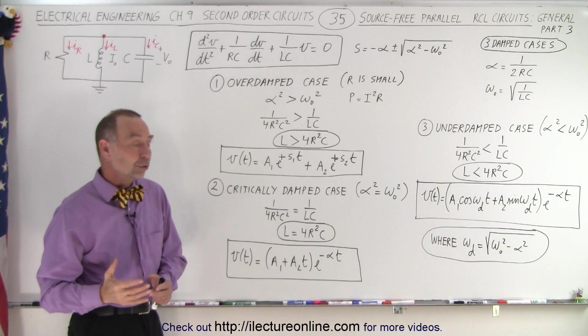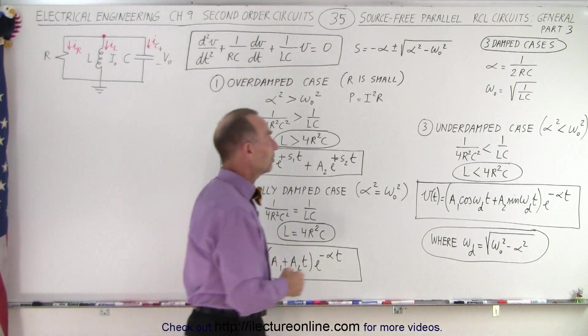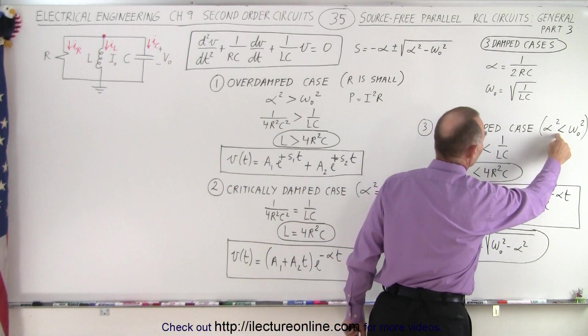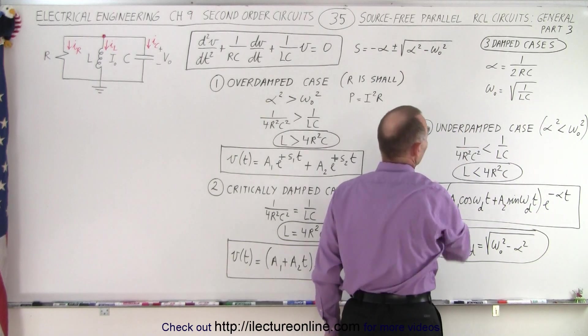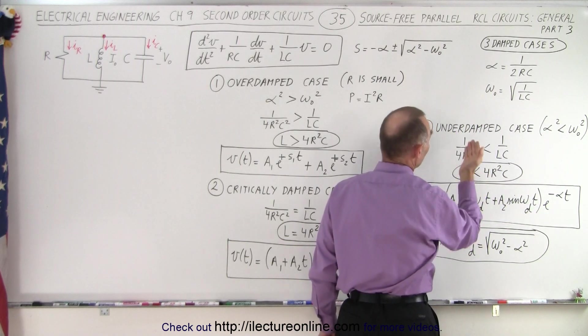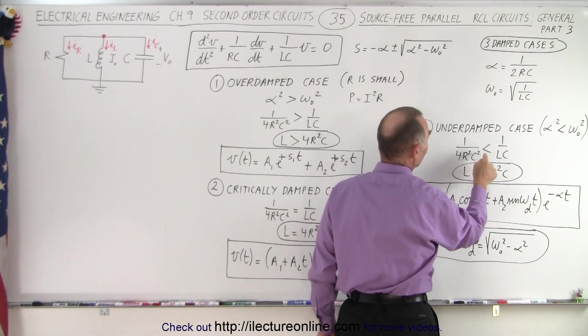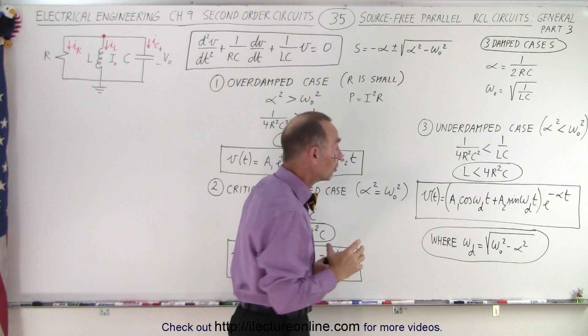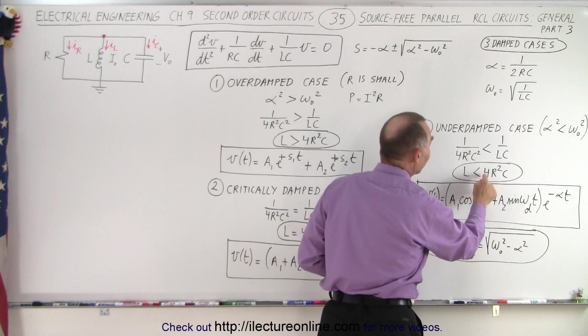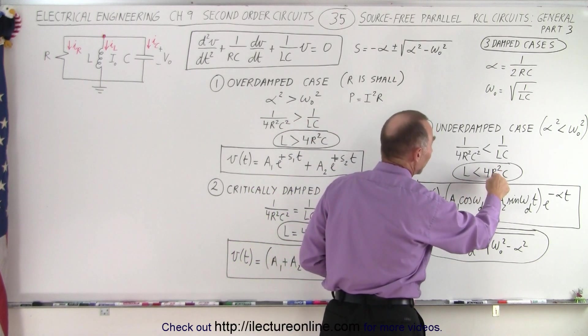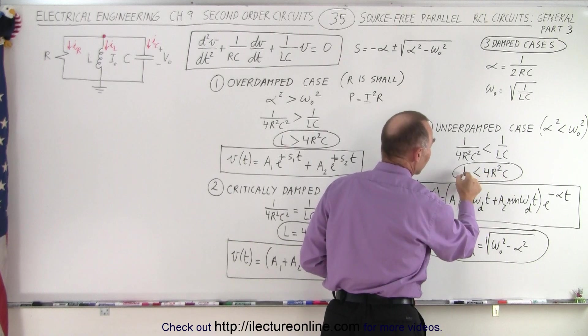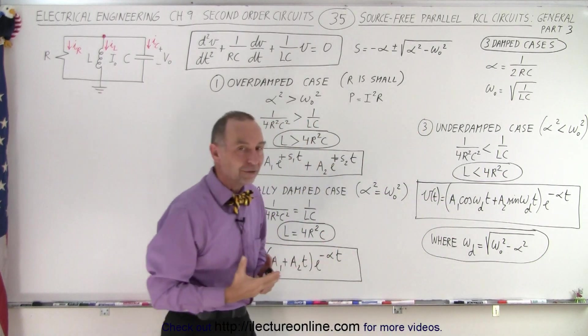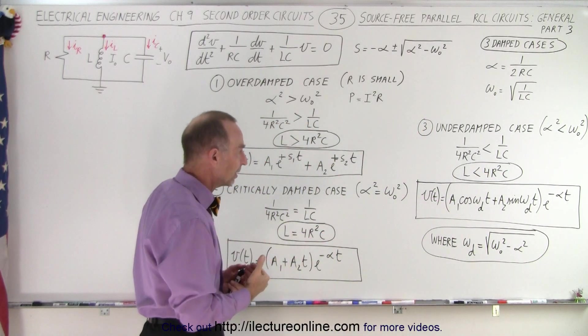And then finally, we go to the underdamped case. The underdamped case where alpha squared is less than omega sub naught squared, so this becomes a negative number. And in this case, of course, we say that 1 over 4R squared C squared is less than 1 over LC, or the value of the size of the inductor is less than 4R squared C. So again, we make R big enough that this now becomes larger than L, and now we have a situation where we have an underdamped case.